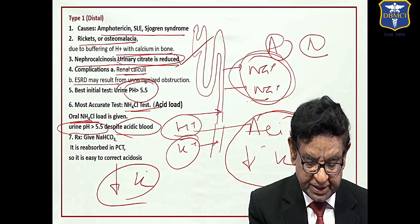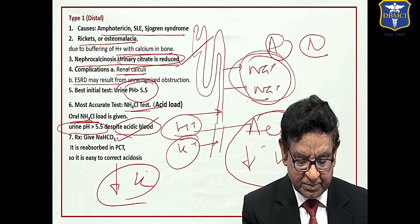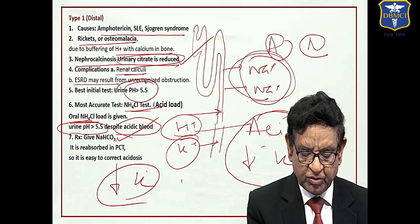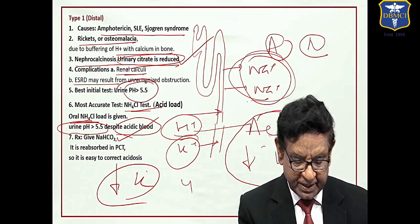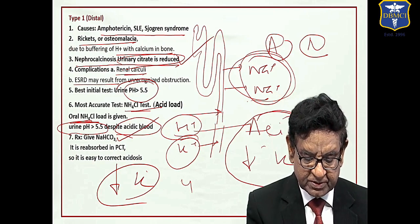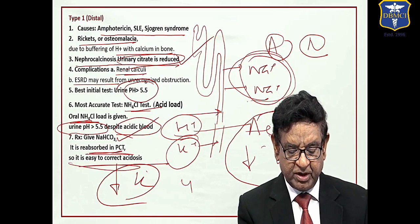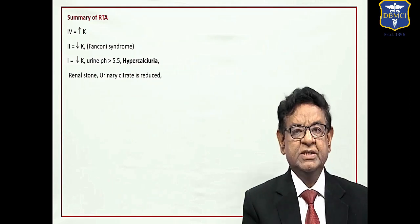In this case you treat with soda bicarb but we need not more than 4 millimole per kg per day because bicarb is absorbed in PCT. This is the best way of correction of acidosis.